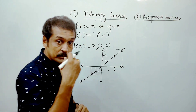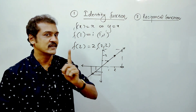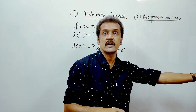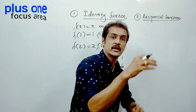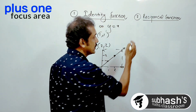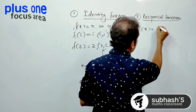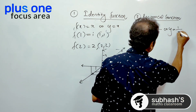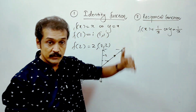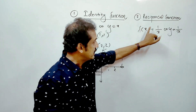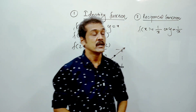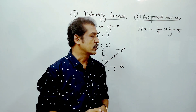The reciprocal function — this function is defined as f of x is equal to 1 by x, or y is equal to 1 by x. This is the reciprocal function standard form. If x is equal to 2, the answer is 1 by 2. 3 is equal to 1 by 3. If x is equal to 1 by x, we will get the reciprocal function.